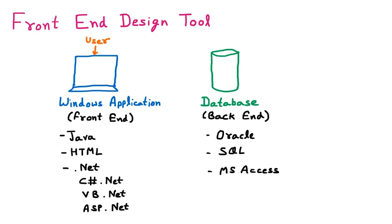MS Access is basically Microsoft Access where we can create tables and store data. Let's say we are developing a form in .NET with a user ID field and a password field. From where will this user ID and password come? The designing part of this form can be done using any language like Java, HTML, or .NET, but saving of the data will be done into the database. Some languages like PHP and Python have their own inbuilt database as well.